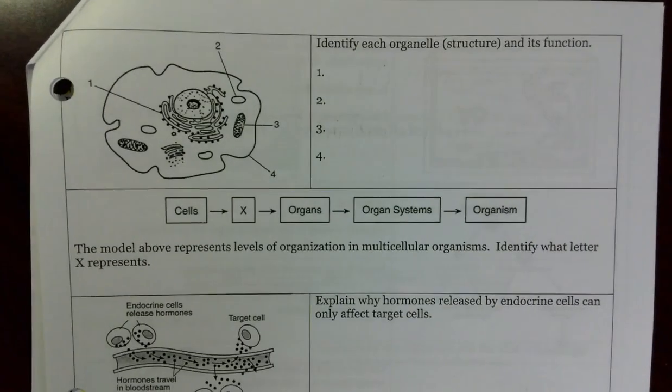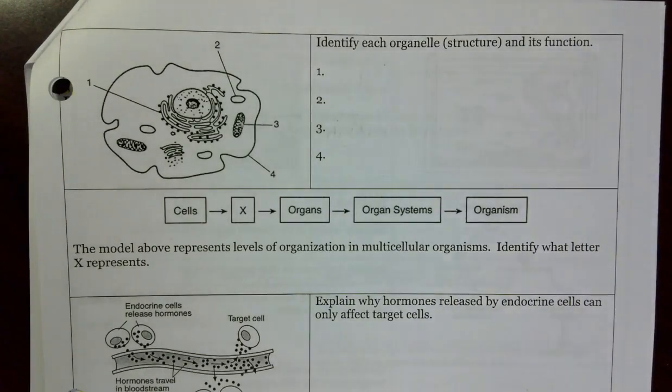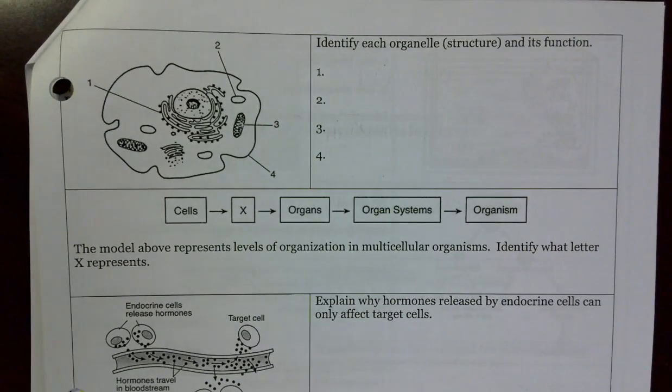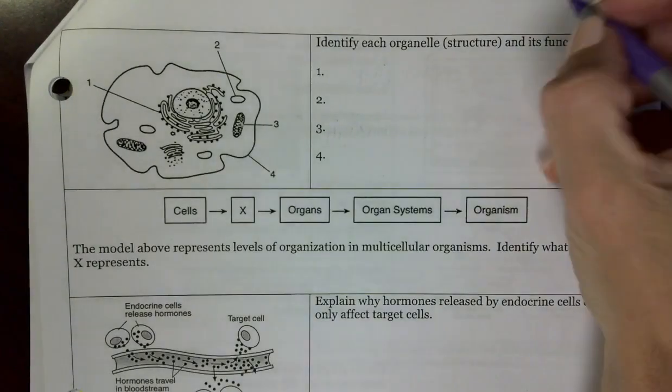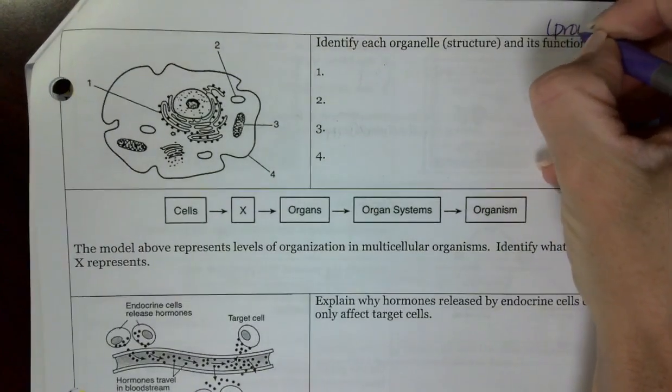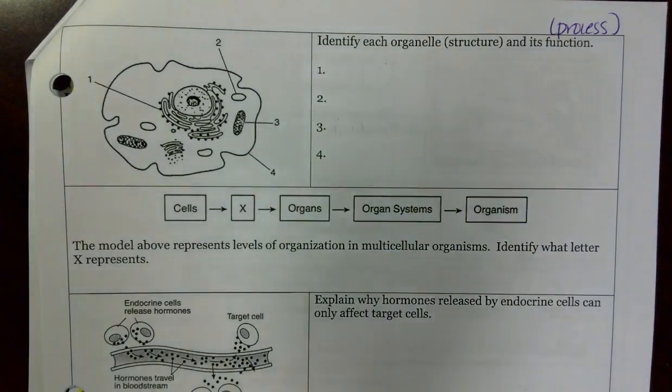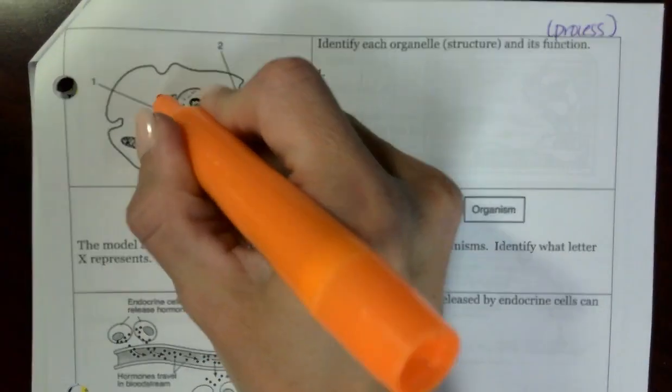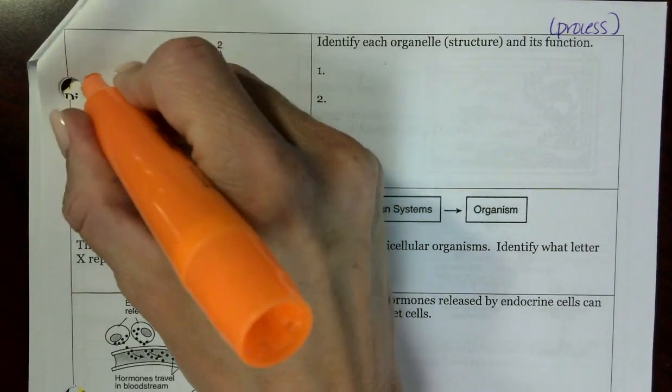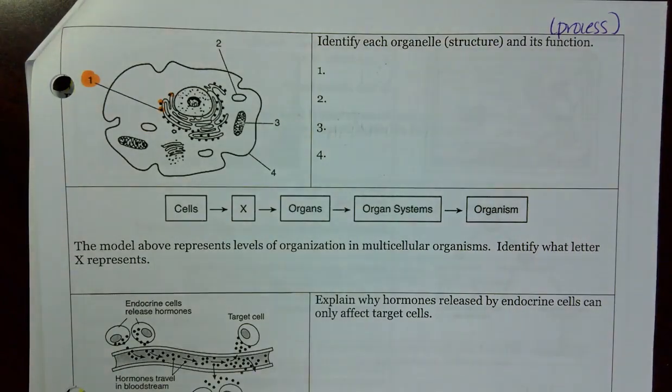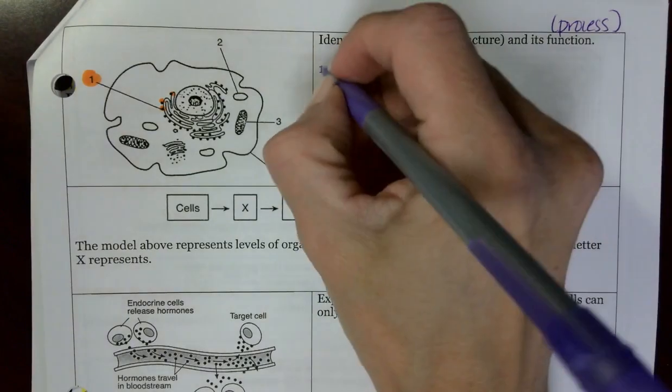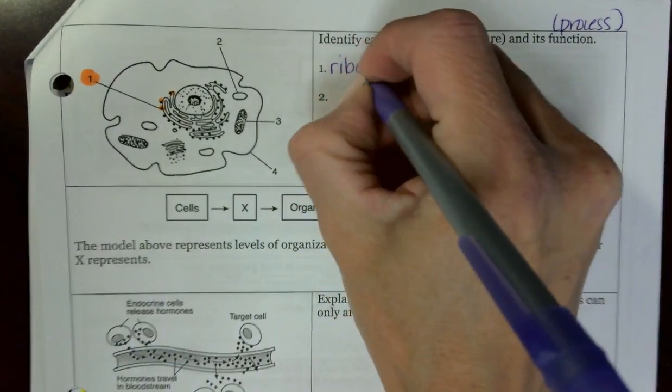Welcome back for part two of the diagram analysis. You'll see we're starting off with something different than ecology. Our first picture is going to be that of the cell. Note I have the terms organelle, structure, and then function. Remember for function it could also be called a process. Looking over here at number one, it's actually pointing to these little dots.